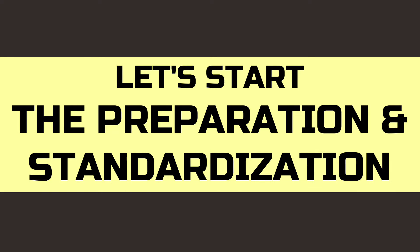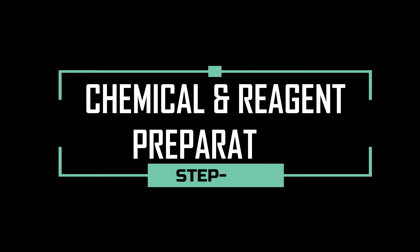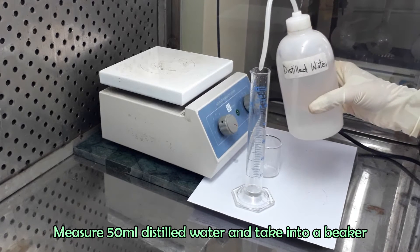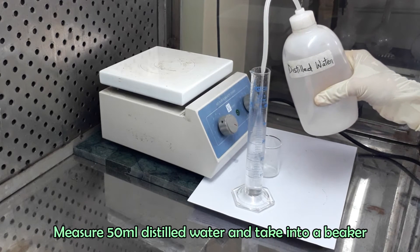Let's start the preparation and standardization of sodium thiosulfate solution. At first, we will prepare chemical and reagent. For the preparation of 1% starch solution, take 50 ml distilled water in a beaker and boil on hot plate.